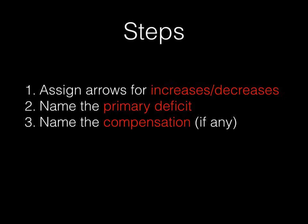Here are the steps for how you do this. I'm going to go through them now, but we're going to do two examples that will make them very simple. First, you assign arrows for increases or decreases in our three main values: pH, bicarbonate, and carbon dioxide. You then name the primary deficit. And then after that, you name a compensation if one exists at all. We're going to go into two examples to illustrate this and make it very easy to understand.